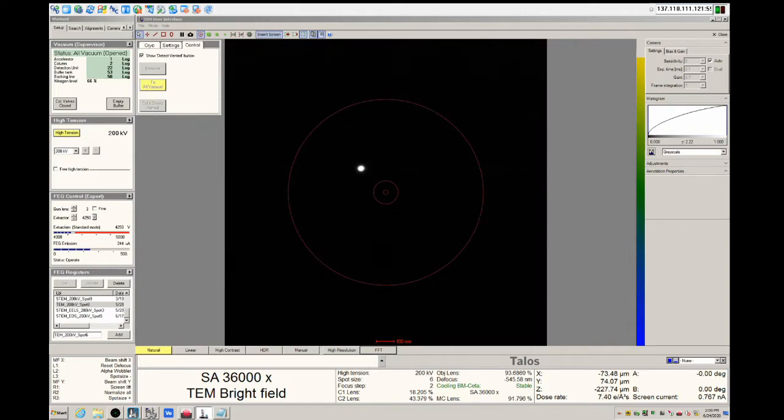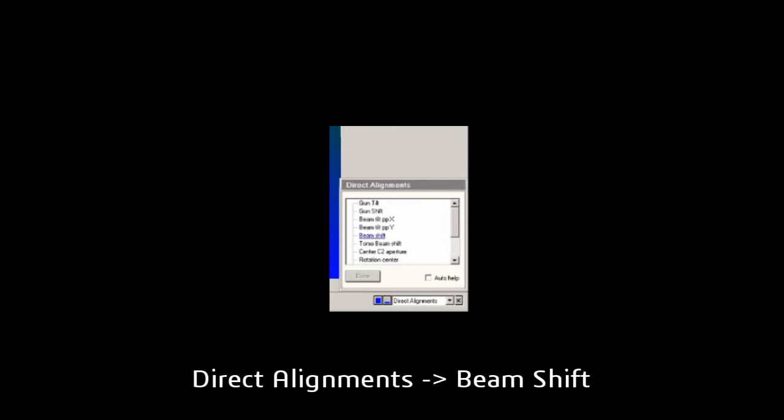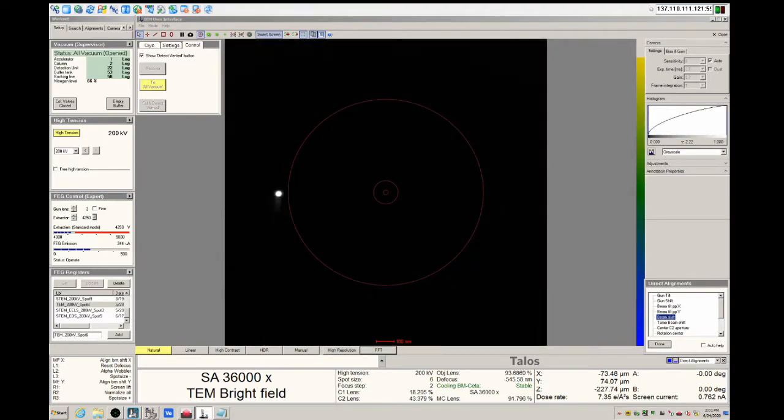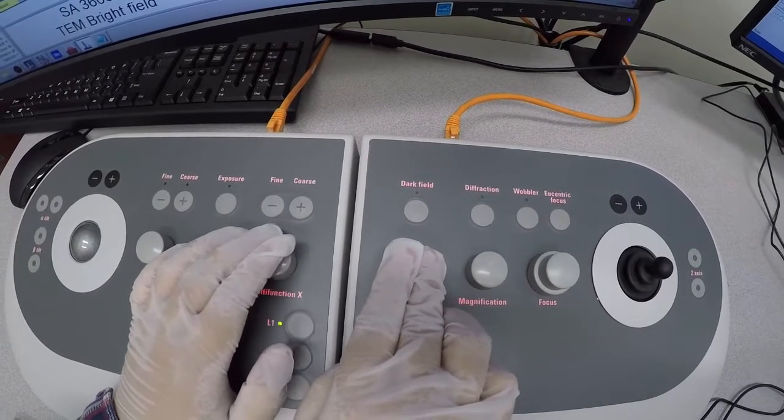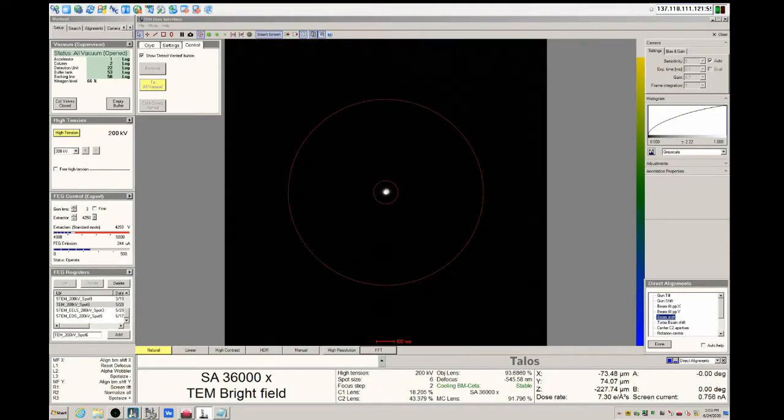Many of the alignments are accessed from the bottom right of the screen. The first alignment will be direct alignments, beam shift. The goal of this alignment is to move the spot into the center of the screen as indicated by the circle fiducial. For almost all alignments, you must use the multifunction X and multifunction Y dials. Take care not to accidentally move the stage with the joystick or otherwise. When complete, click done.